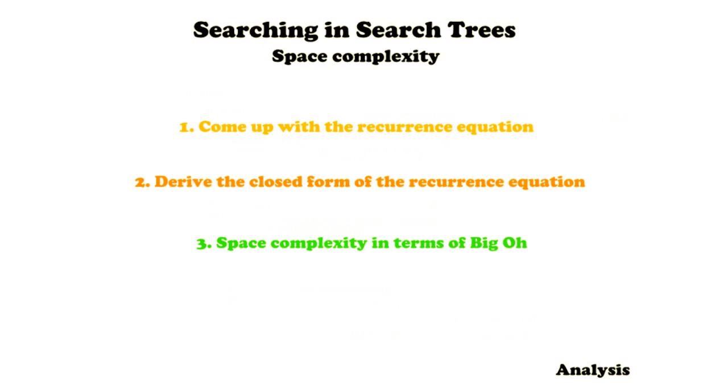So let's now try to analyze the space complexity. We're going to analyze space complexity in terms of three steps. The first one is that we're going to come up with a recurrence equation for the algorithm in terms of the height. Then we're going to derive the closed form of the recurrence equation. Finally, we're going to come up with the answer we're looking for, namely the space complexity in terms of Big O.